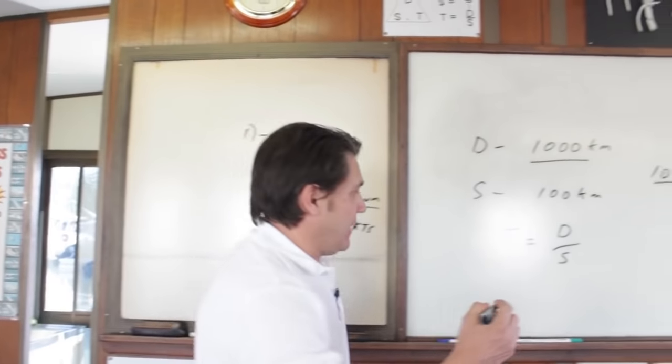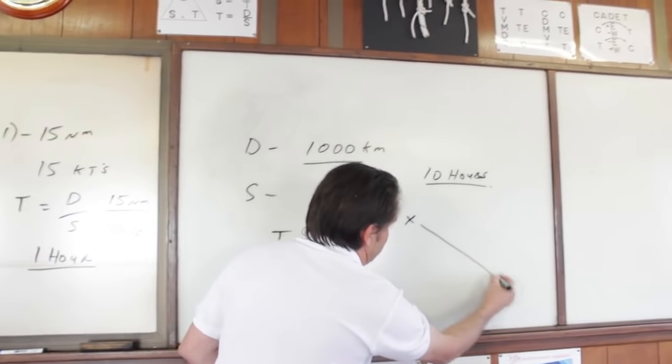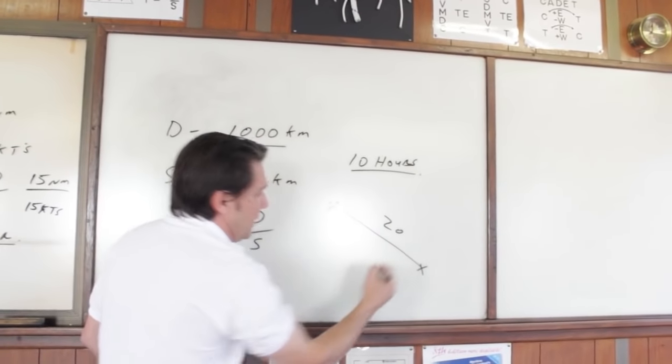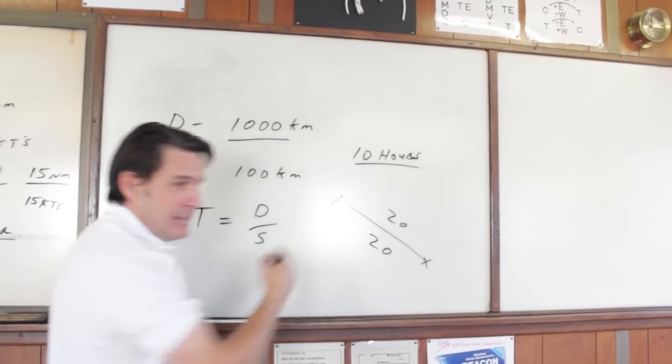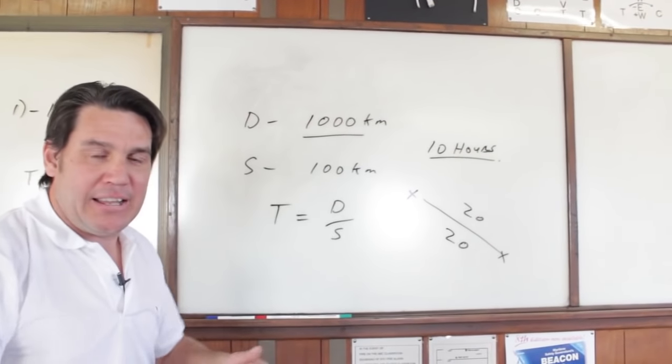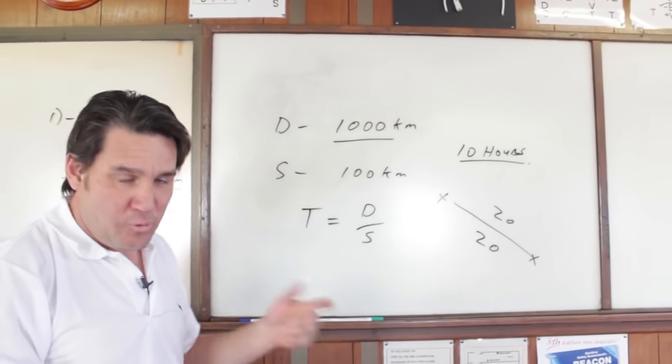We would carry enough fuel to get there, 20 litres. We'd carry enough fuel to return, 20 litres, and we would carry another 20 litres as our contingency or reserve.